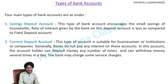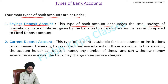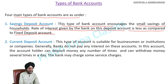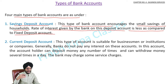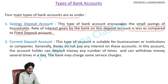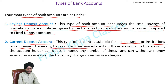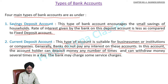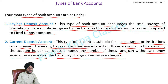The next topic is types of bank accounts. The first is the saving deposit account, which encourages small savings of households. The rate of interest on this account is very low compared to fixed deposit — in India it has decreased from around 6% to about 3–4%. The second is the current deposit account, suitable for businessmen, institutions, or companies. Banks generally do not pay interest on these accounts, but the account holder can deposit and withdraw money any number of times in a day. The bank may charge service charges for this type of account.